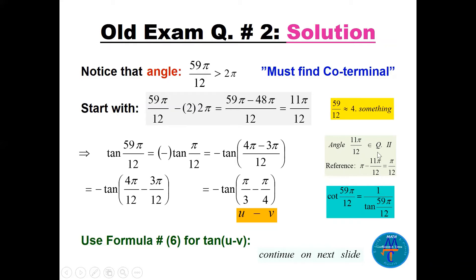Since 11π/12 lies in quadrant two, tangent is negative there. Both 59π/12 and its coterminal angle 11π/12 lie in quadrant two. So tan(59π/12) equals −tan(reference), where the reference angle is π/12.